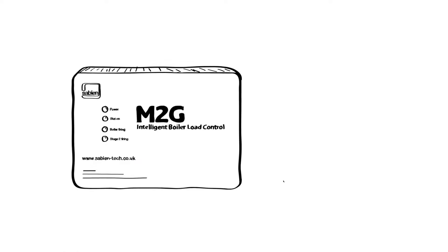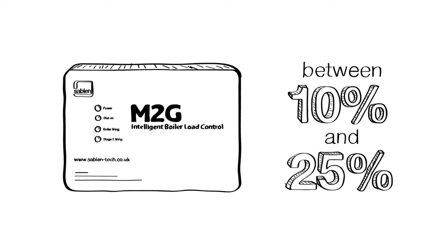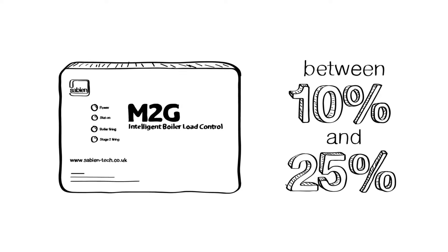The M2G. If you're wondering what it is and how it can reduce your energy costs by between 10% and 25%, then let us explain.